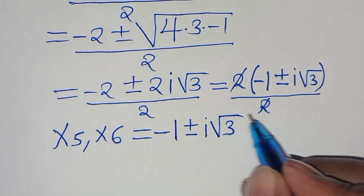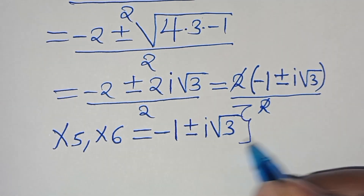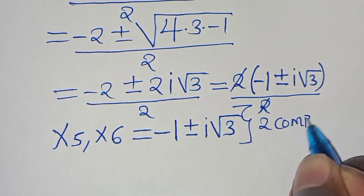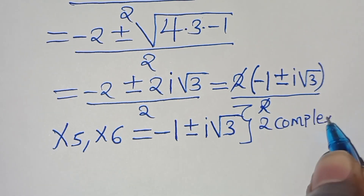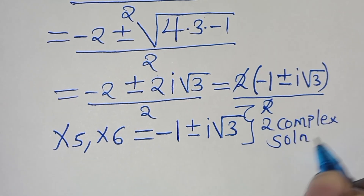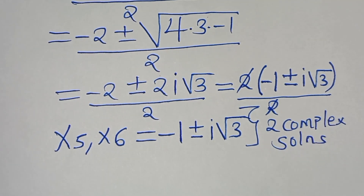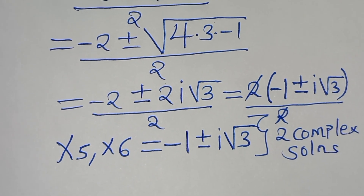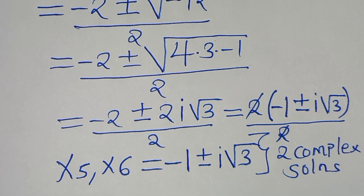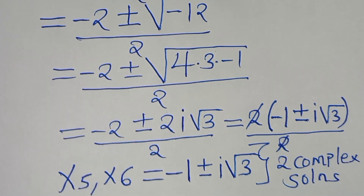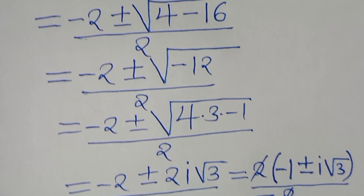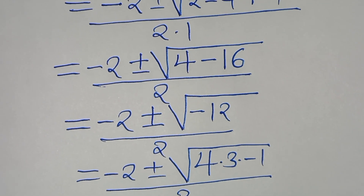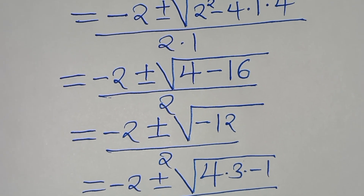These are two complex solutions for case 2. This gives us a total of 6 solutions for this algebra problem.